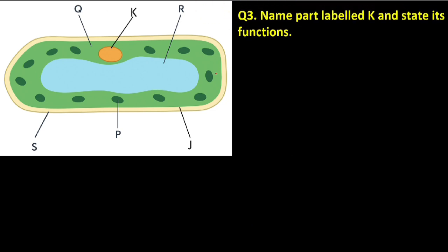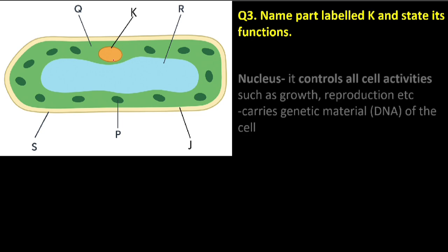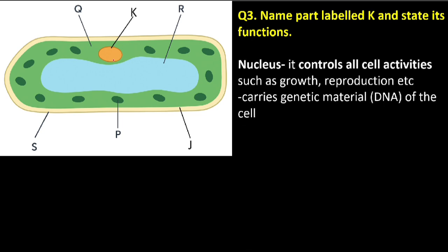Question number three: name the part labeled K and state its function. K is the nucleus. The nucleus has two functions: first, it controls all the cell activities such as growth and reproduction. It also carries the genetic material — that is the DNA of the cell. Those are the two functions of the nucleus.